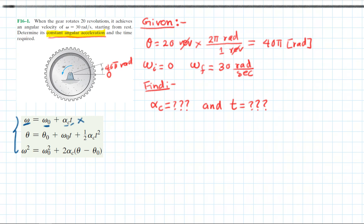The second equation also has two unknowns, so it will not work either. The third equation gives us: ω_final² = ω_initial² + 2α_c(θ_final - θ_initial). We have the final and initial omega, and the displacement goes from 0 to 40π radians, so we can use this equation to find the constant angular acceleration.